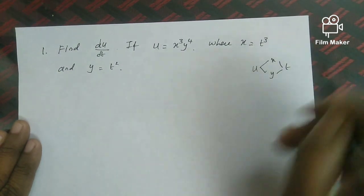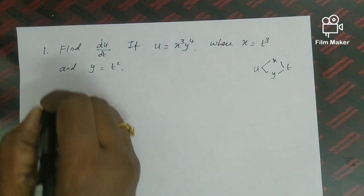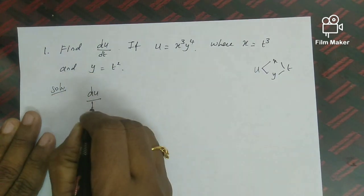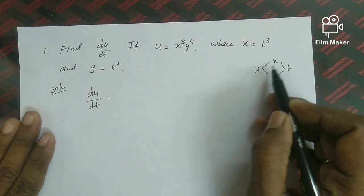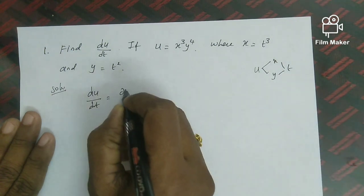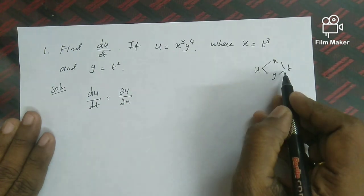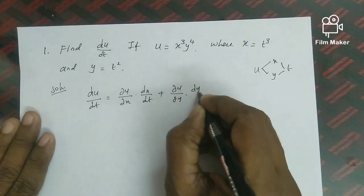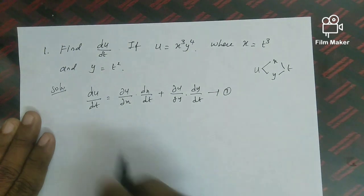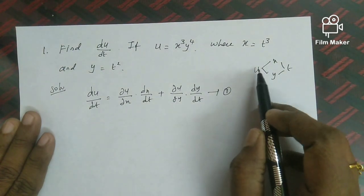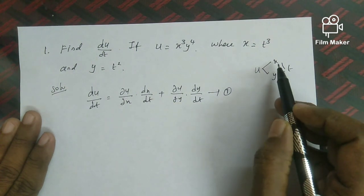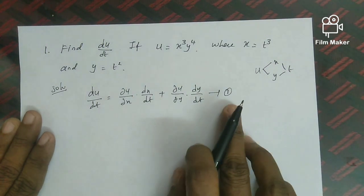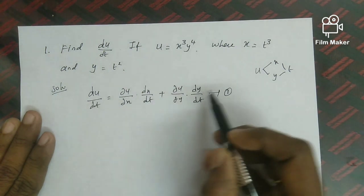So u is a function of xy, and xy are variables of t. We write du by dt using the total differential formula: du by dt equals partial u by partial x into dx by dt plus partial u by partial y into dy by dt. This is equation 1. Now, since u is a function of x and y, we compute partial u by partial x and partial u by partial y. And since x and y are single variable functions of t, we compute dx by dt and dy by dt.